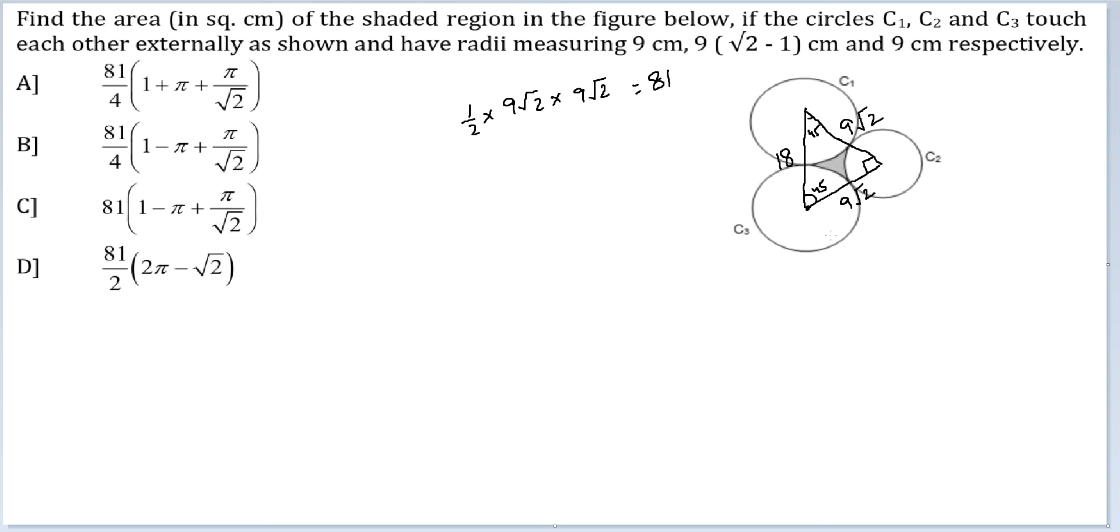Area of this triangle is 81 and from this you have to remove a semicircle with radius 9. Actually, not semicircle, quarter circle with radius 9 and a quarter circle with radius 9 root 2 minus 1.